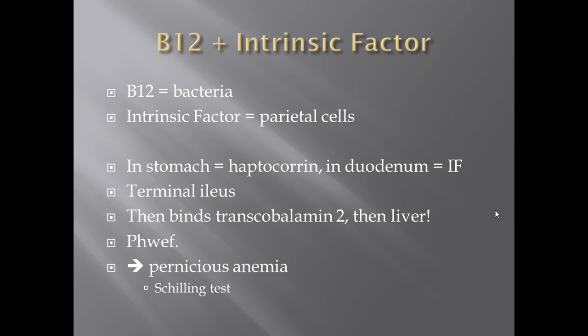An important clinical correlate: pernicious anemia. Pernicious anemia is where the body forms autoantibodies against parietal cells, knocking them out and causing an intrinsic factor deficiency. This can be detected via the Schilling test — I have a separate video on that if you want to learn more.